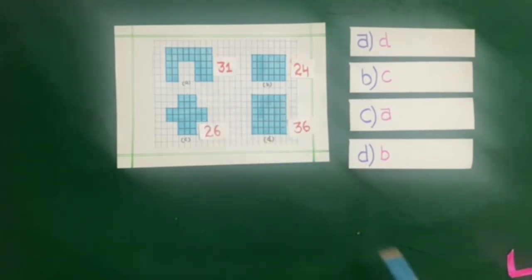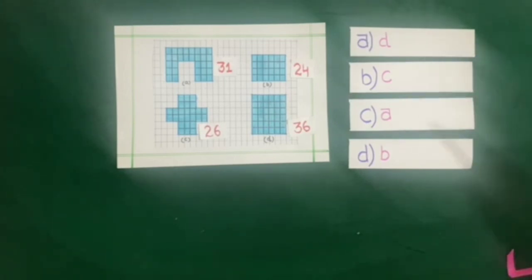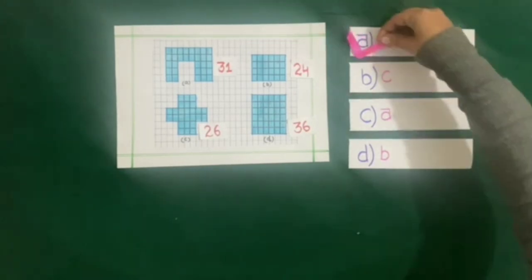The number of squares in figure D are 36. So the maximum number of squares is in D, and our correct answer is A, that is D.